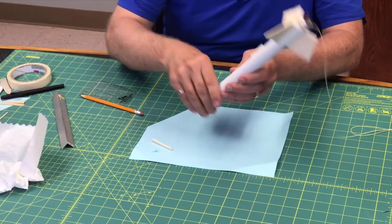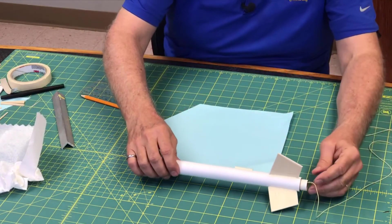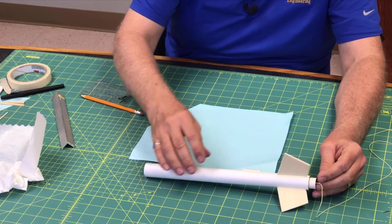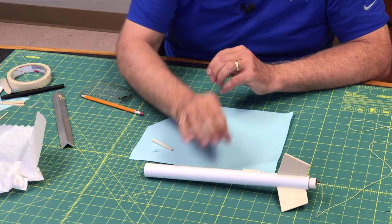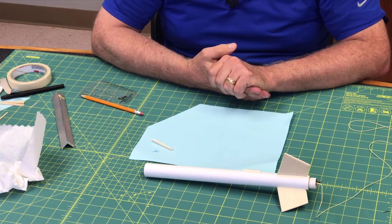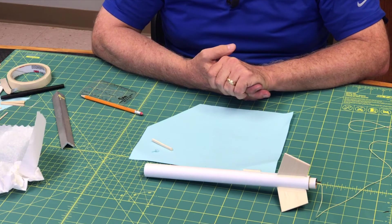Now when you set these to dry, don't set it vertical like this. Make sure you set it horizontal, otherwise the glue will run down the end of the fillets. So just leave it like that and in about two or three hours it'll be dry. Great, have fun putting fillets on your rocket.